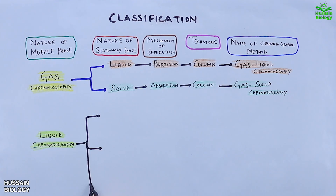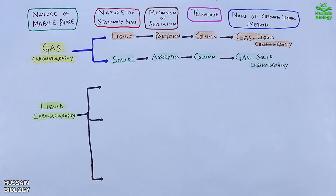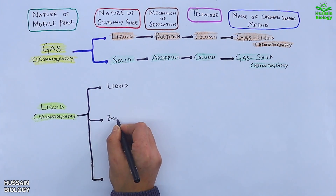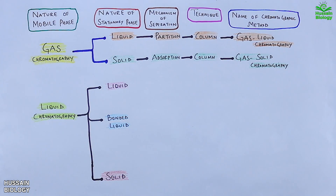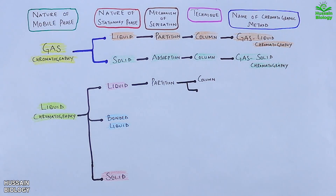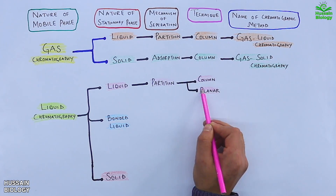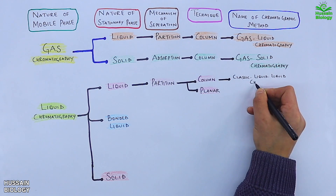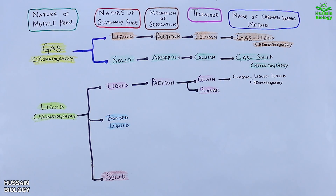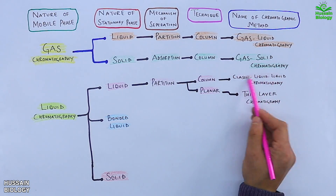Now moving to liquid chromatography based on nature of mobile phase. Under nature of stationary phase we have liquid chromatography, bonded liquid chromatography, and solid chromatography. The liquid stationary phase type is classified into partition chromatography by mechanism, and technically divided into column and planar chromatography. The column technique is termed classic liquid-liquid chromatography, and the planar technique is termed thin layer chromatography, or simply TLC.